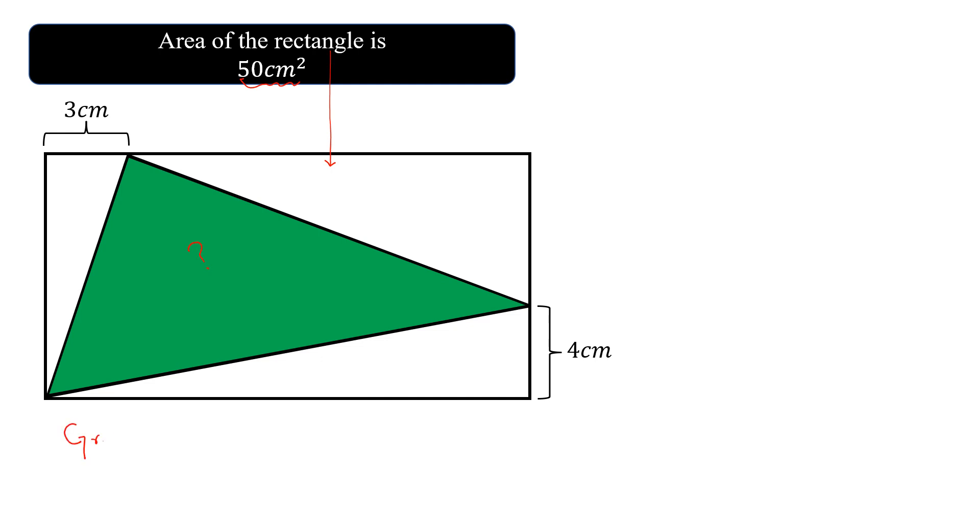We calculate this green area by 50 minus the sum of these three areas. Let this is A1, this is A2 and this is A3. If we subtract this sum from 50, we can find this green area. But how do we find A1, A2 and A3? Let the width of this rectangle be a and the length of this rectangle be b, then this length will be equal to a minus 4 and this length will be equal to b minus 3.